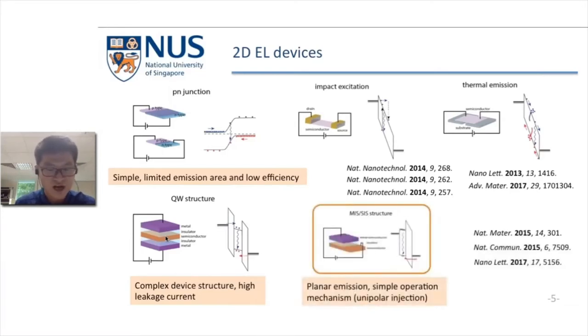In this talk, I will focus on the MIS structure consisting of metallic, insulating, and semiconductor layers. In these devices, we achieved planar emission, and we expect the working mechanism will be unipolar carrier injection.